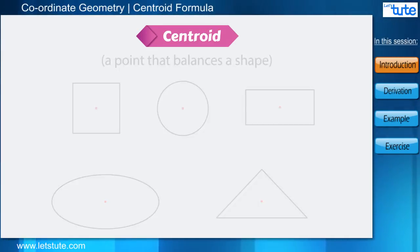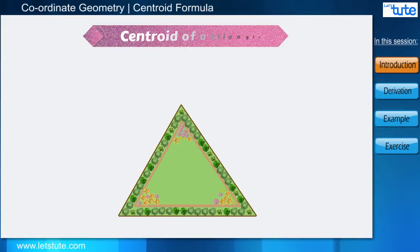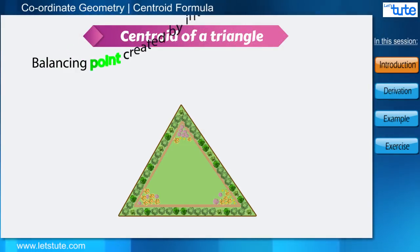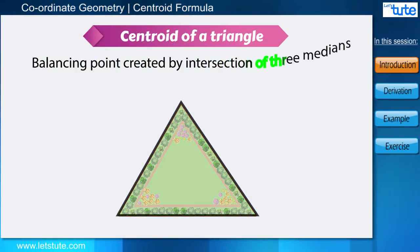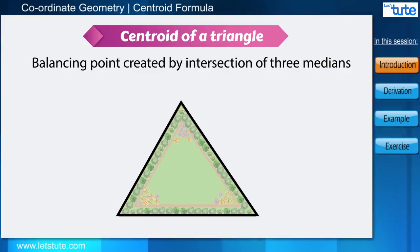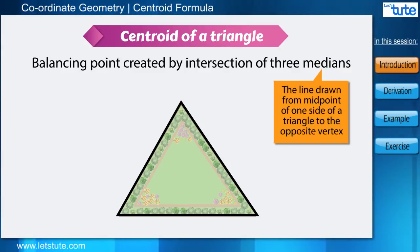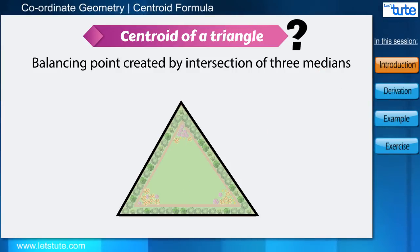Since we are talking about the triangular garden, the centroid of the triangle is the balancing point created by the intersection of three medians. The median is the line drawn from the midpoint of one side of the triangle to the opposite vertex. Now, how can we find the centroid? As we just learned, the centroid is the intersection of three medians.